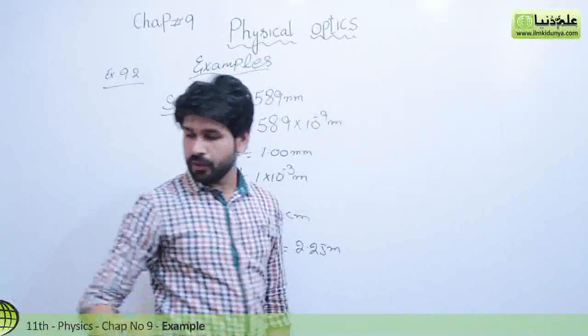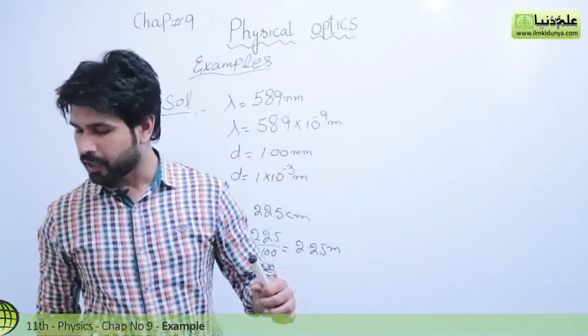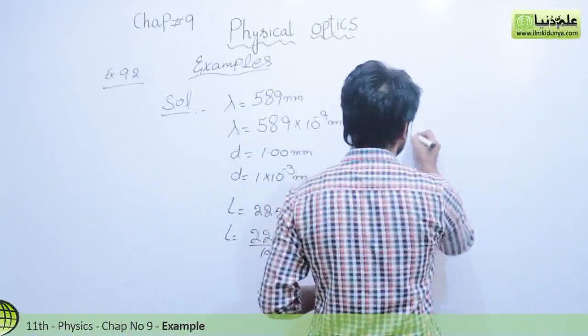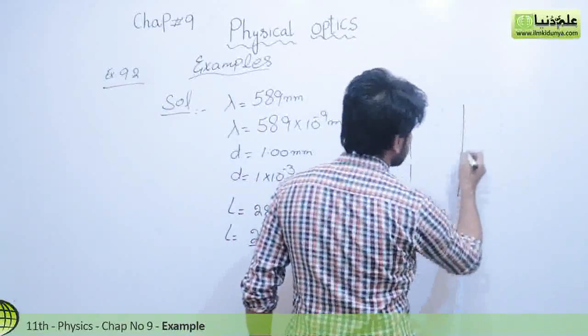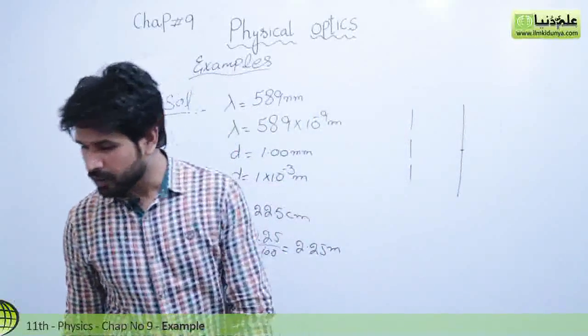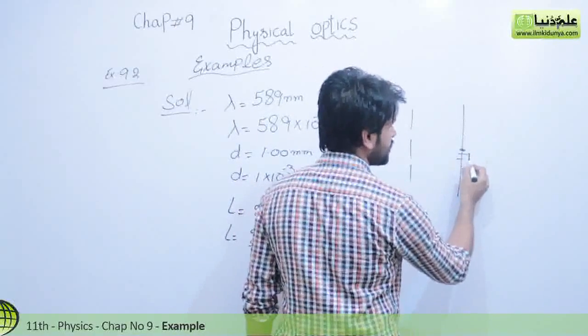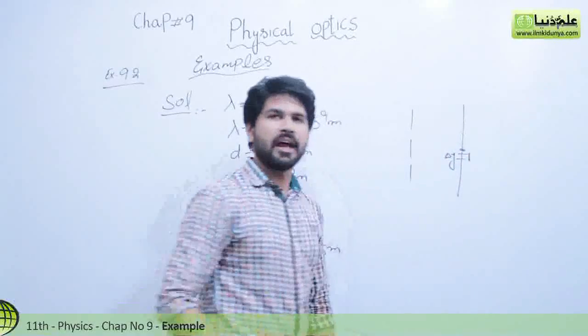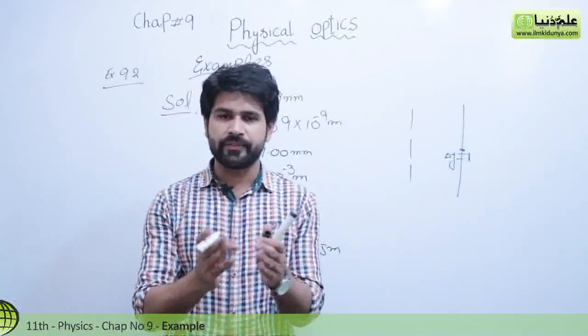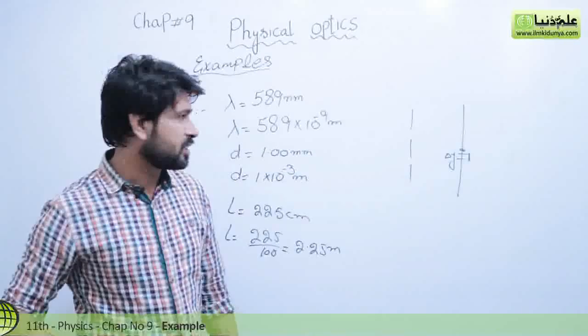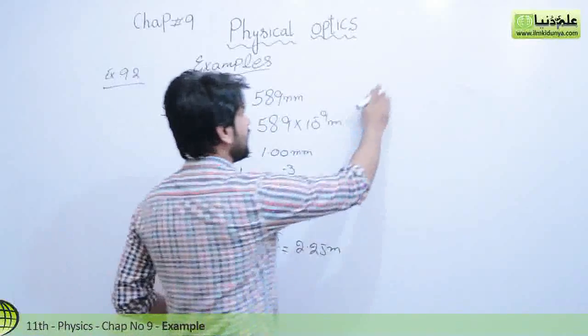Now we have to find out how far apart are two adjacent bright fringes. Say this is a center point and these are two adjacent bright fringes. This distance is delta y. We will have to find out delta y.